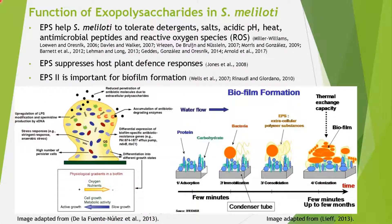The function of Exopolysaccharide in S. meliloti is to help tolerate detergents, salts, acid pH, heat, antimicrobial peptides, and reactive oxygen species known as ROS. EPS suppresses host plant defense responses because it lives in the root nodules. EPS is also important for biofilm formation, as you can see here. The importance of biofilm formation is to protect the bacteria from antibiotics. Reduced penetration of antibiotic molecules is due to extracellular polysaccharides.